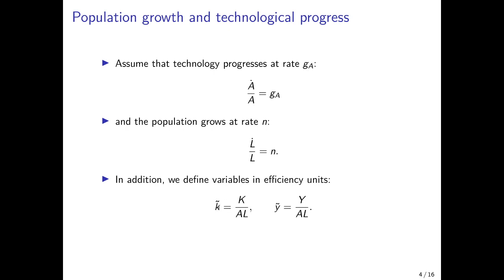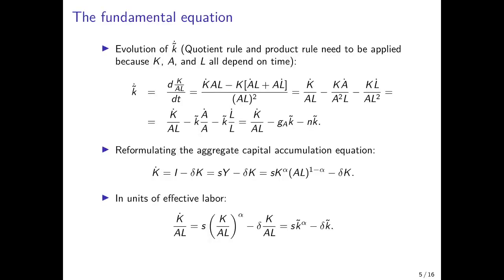We denote by lowercase letters with a tilde aggregate variables that are divided by the efficiency units of labor. At the new steady state of this version of the model, the transformed variables stay constant, so we can again draw a Solow diagram in the transformed variables. Then from this diagram, we move on to describe what happens to per capita capital and per capita GDP. We have GDP per unit of effective labor, which is aggregate GDP divided by the product of labor productivity and the number of workers.